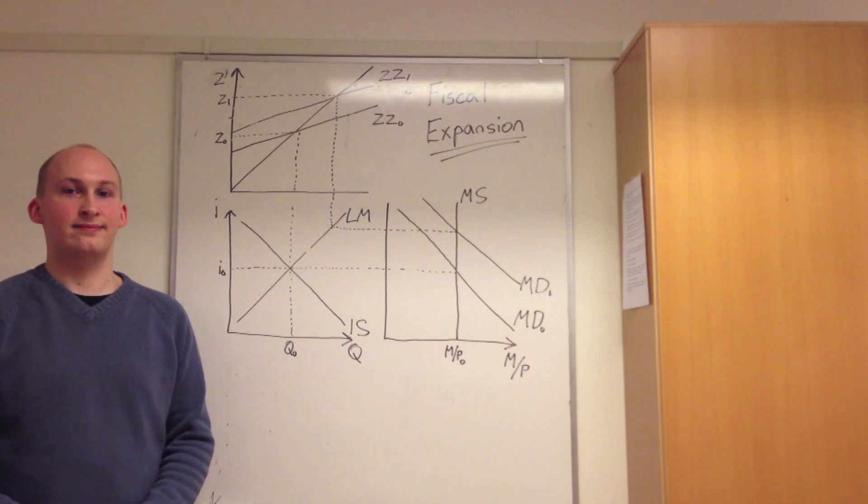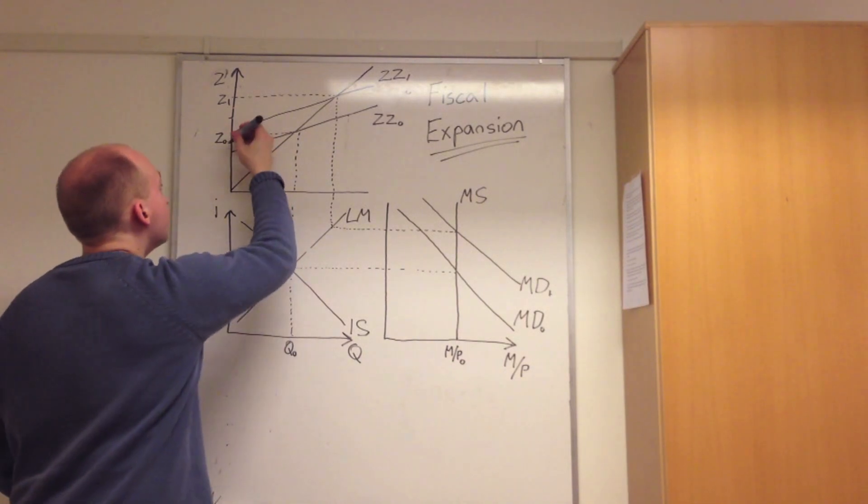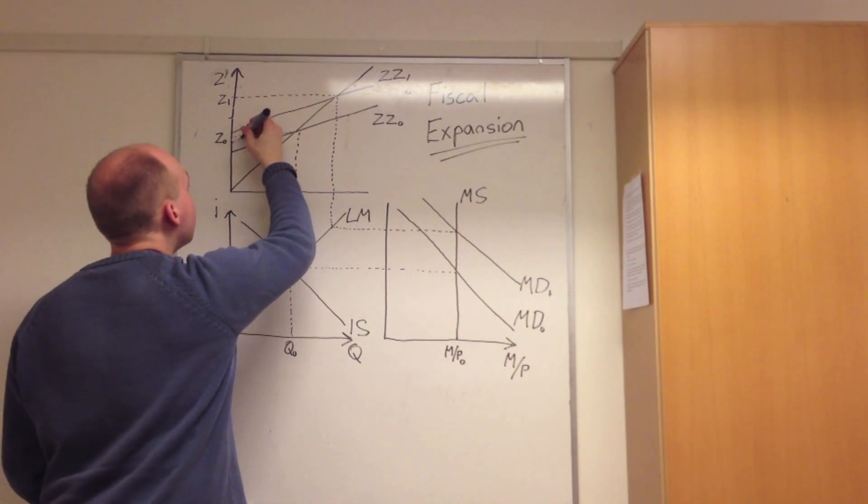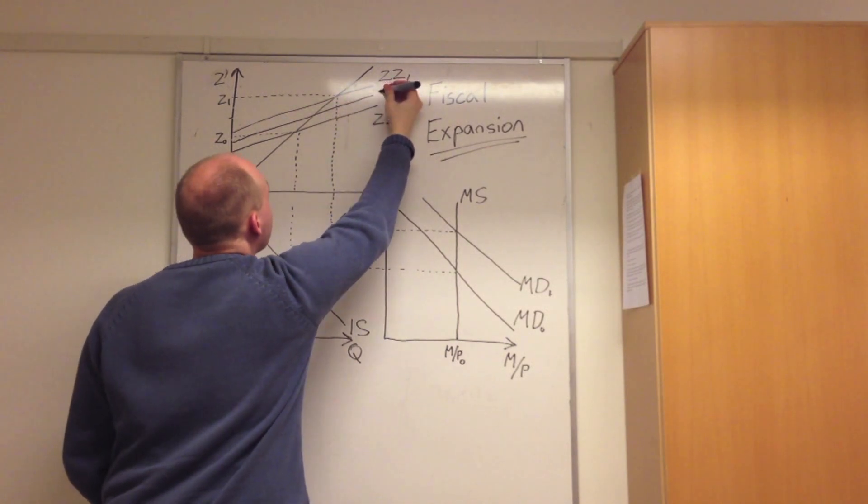From an increase in the interest rate I, we find that it also becomes more expensive to borrow, and thus investments decrease. From a decrease in investments, this would mean that demand would shift downwards from ZZ1 to ZZ2, a lower demand level.